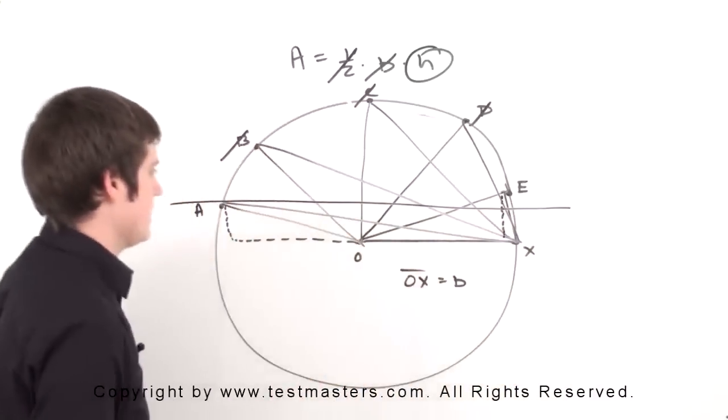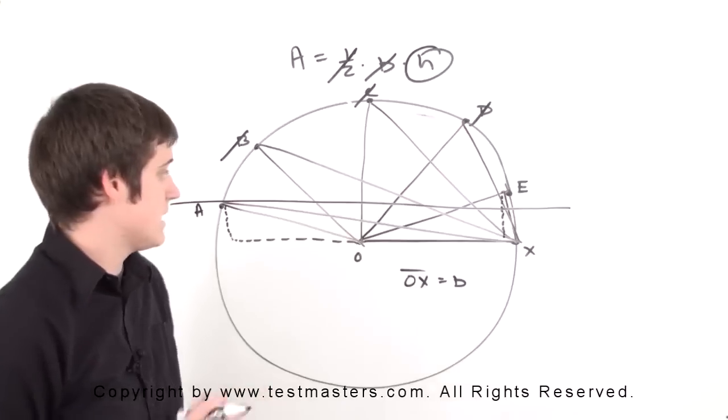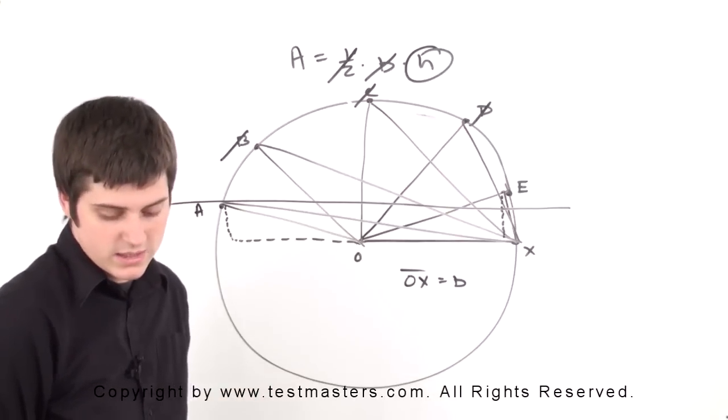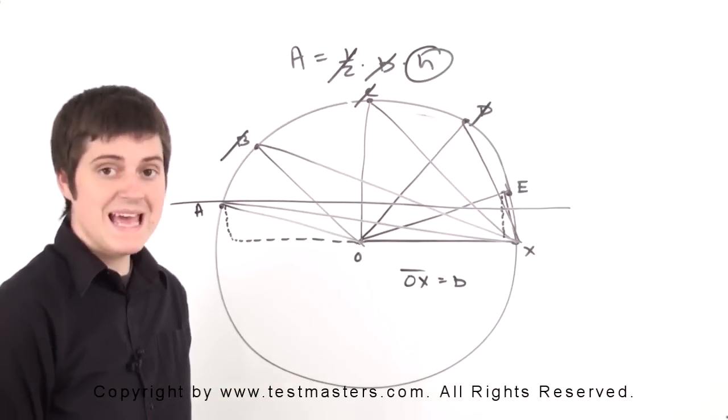If I draw a line straight across, looking at it, it looks like AOX is going to have a smaller area than EOX. So the correct answer for number 5 is A, AOX.